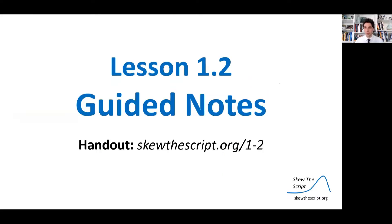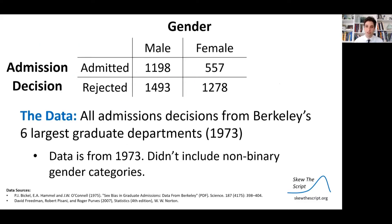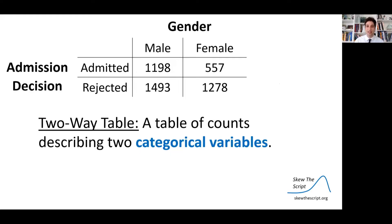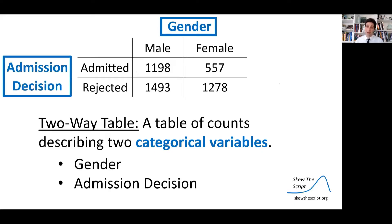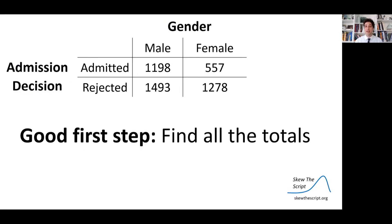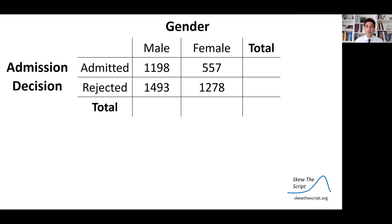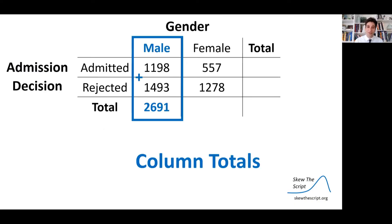If you'd like to follow along, you can print up our guided notes. First, we're going to discuss marginal distributions by looking at our full dataset. This is all admissions decisions from Berkeley's six largest graduate departments in 1973, organized in a two-way table — a table of counts describing two categorical variables. The two categorical variables are gender and the admissions decision: whether they were admitted or rejected. A good first step is to find all the totals.